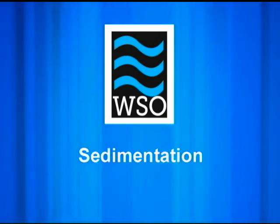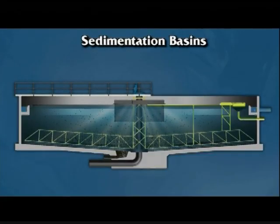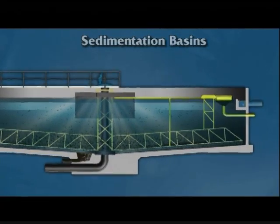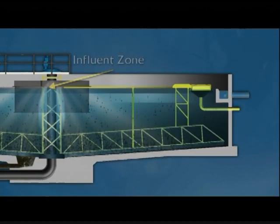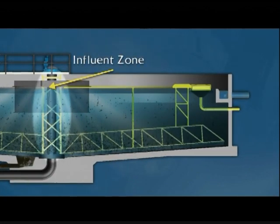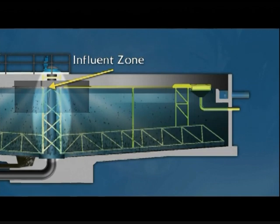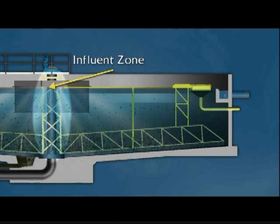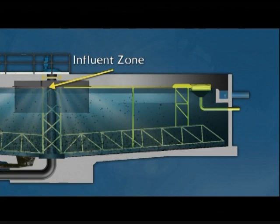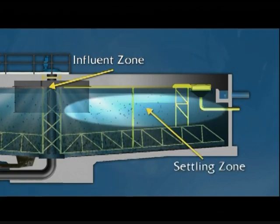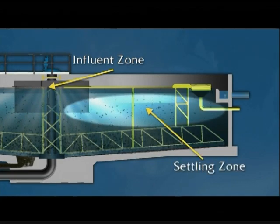Traditional sedimentation basins have four zones. One, the influent or inlet zone decreases the velocity of the incoming water and distributes the flow evenly across the basin. Two, the settling zone provides the calm area necessary for the suspended material to settle.